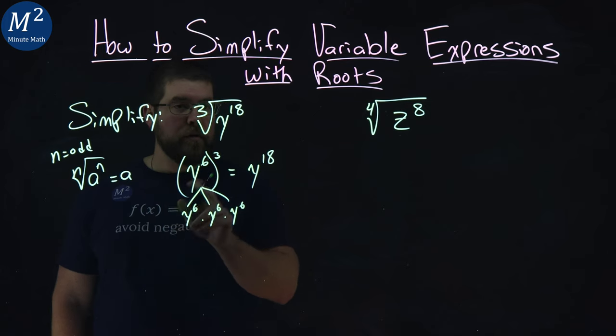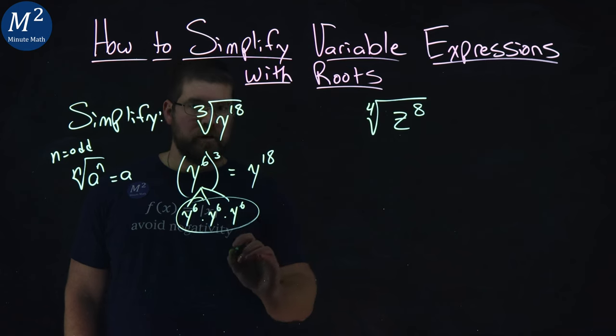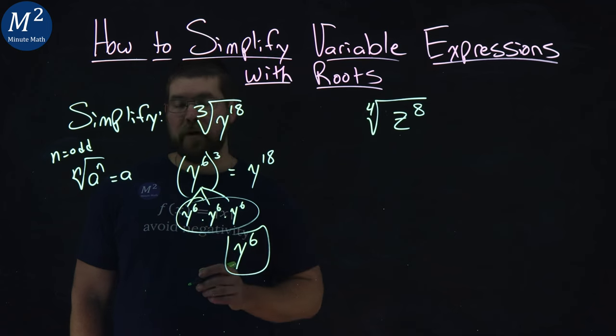The third root of y to the 18th power, we just grab all three of them and keep one, and so the third root of y to the 18th power is just y to the sixth power here.